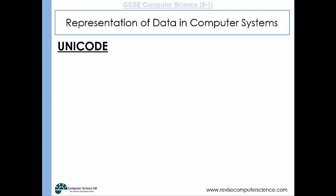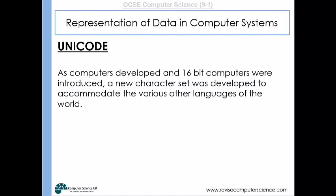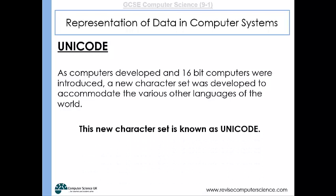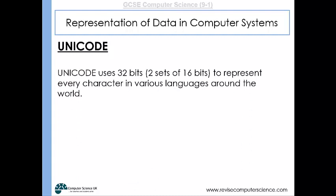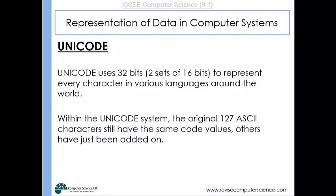Unicode is another character set used to represent many other characters. As 16-bit computers were introduced, new character sets were developed to accommodate the various other languages of the world, and this character set is called Unicode. Unicode uses 32 bits — two sets of 16 bits — to represent every character in various languages around the world. Within the Unicode system, the original 127 ASCII characters still have the same code values, with the same binary numbers representing them, but additional characters have just been added on.